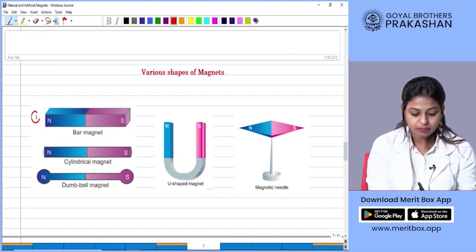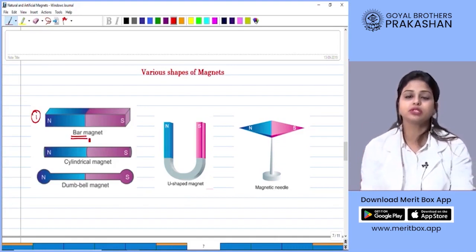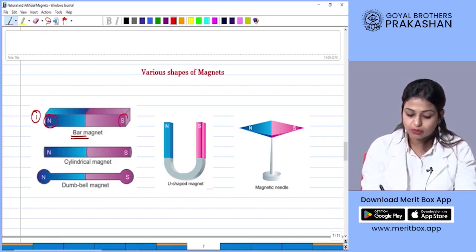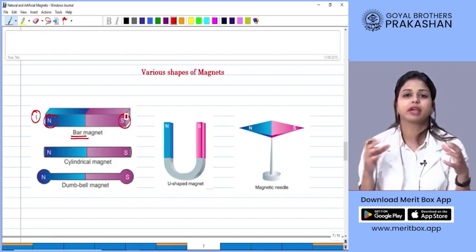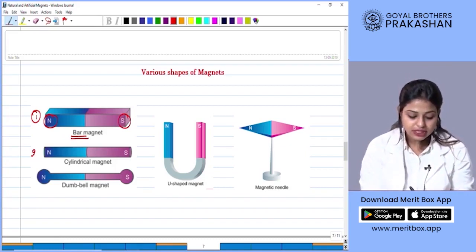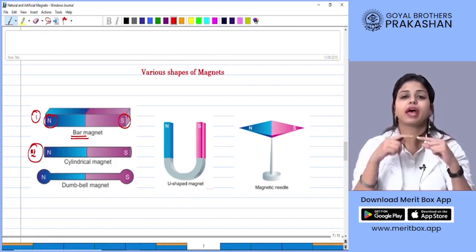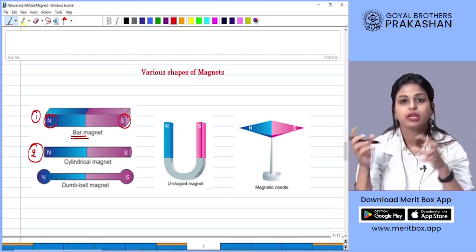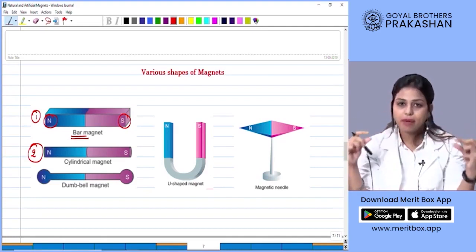One such shape is the bar magnet. This is the most common of the magnets. It has the north and the south pole in it and it's shaped like a bar. The other one is a cylindrical magnet. It might be shaped like a cylinder that you see at your home. It is the shape of a pipe.